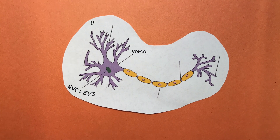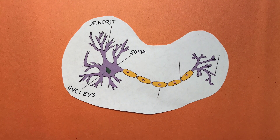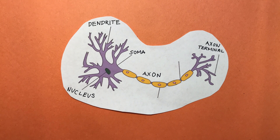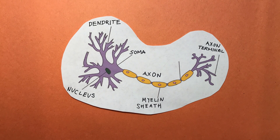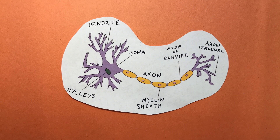Dendrites receive signals from other cells and conduct them to the cell body, where the signal is passed down the axon to other neurons, muscles, or glands through junctions formed by the axon terminal. Myelin sheaths allow electrical impulses to be transmitted quickly and efficiently along the nerve cells. Nodes of Ranvier are periodic gaps in the myelin sheath that facilitate the rapid conduction of signals down the neuron.